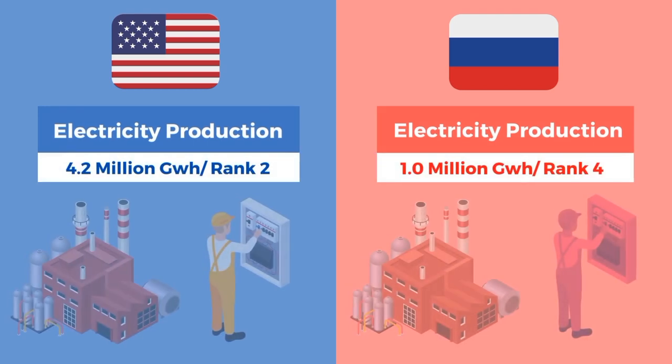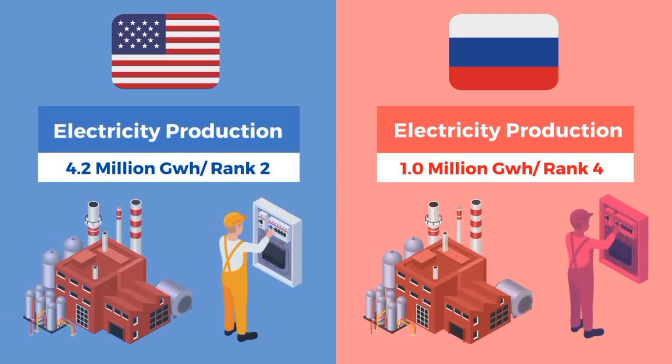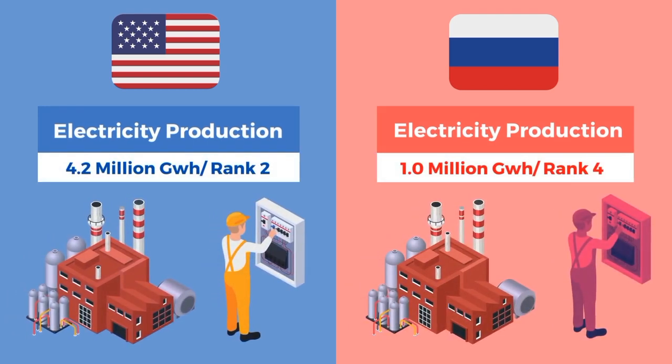US electricity production is 4.2 million gigawatt hours, ranked 2nd. Russia's electricity production is 1.0 million gigawatt hours, ranked 4th.